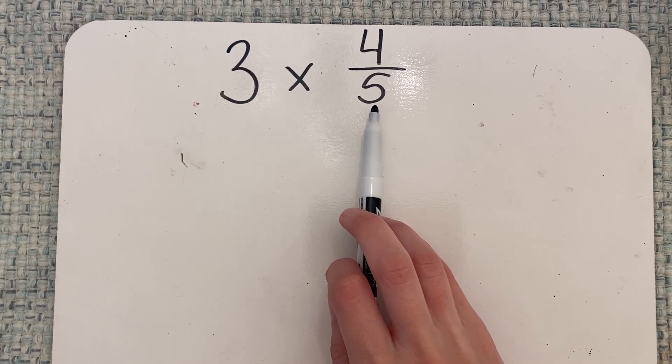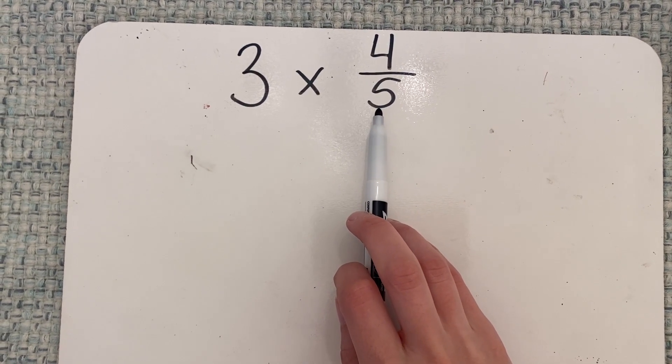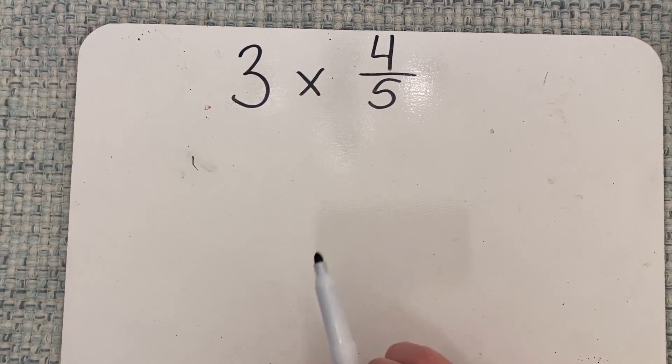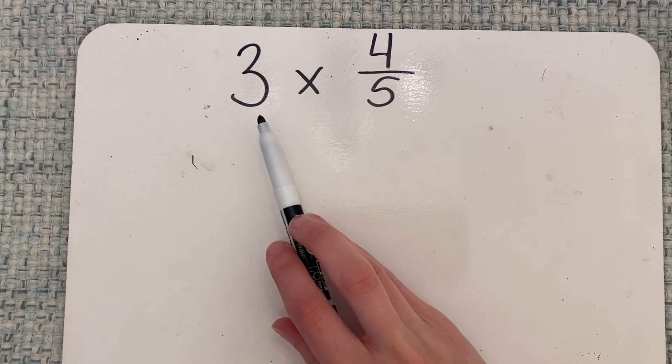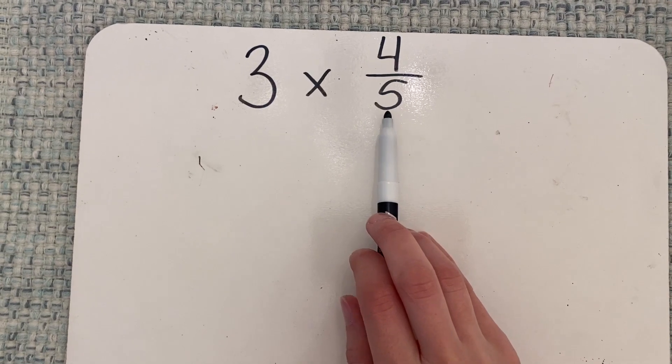We're not getting smaller, like the size of the piece is not getting smaller. We're just getting more pieces, more fifths, but the pieces are staying the same size. The whole number is telling us how many groups we're making, and this is the size of each group.